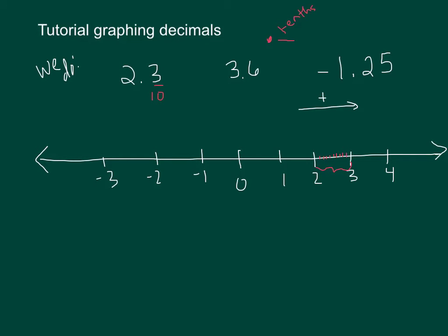So smaller pieces. Out of those 10 pieces, I have gone across 3 of them. 1, 2, 3, to this spot right there. And that is 2.3.